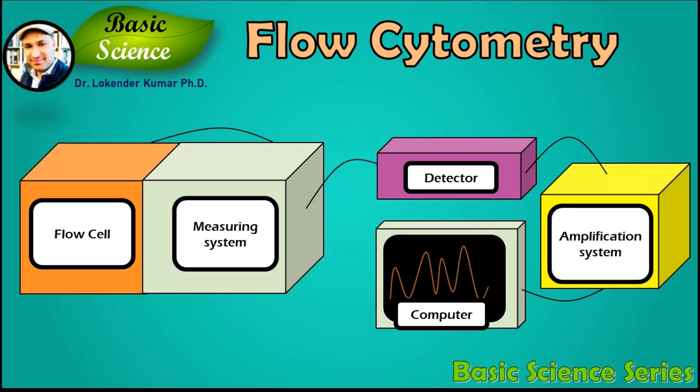A flow cytometer has five main components: a flow cell, a measuring system, a detector, an amplification system, and a computer for analysis of the signals.